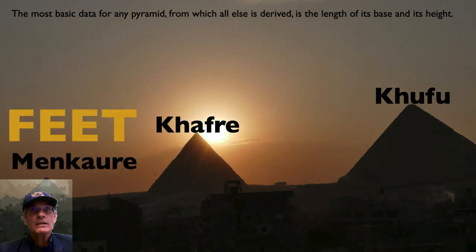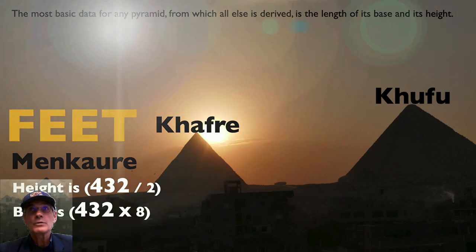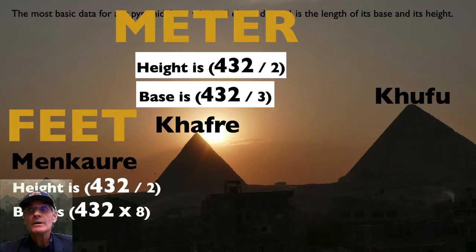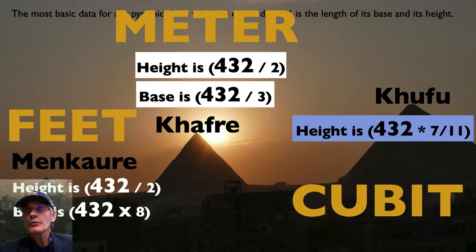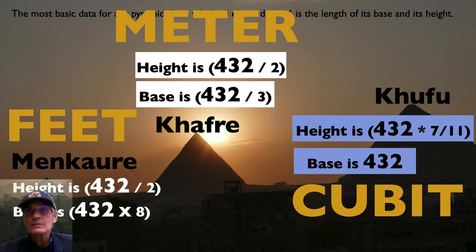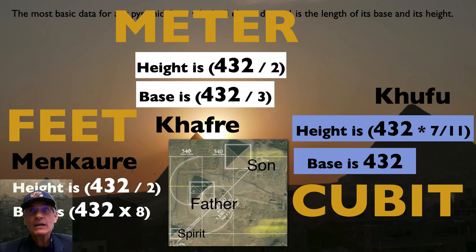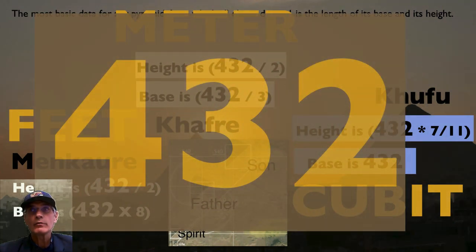And what I just think is even more unbelievable, look at this. Look at this. Menkaure, the 432 comes through feet. Khafre, that 432 that we saw comes through the meter. And Khufu, that 432 we saw comes through the cubit. Three different standards of measure. It's like the trinity. Three separate gods here, each with their own defining measure. And yet all working in harmony with each other. A trinity of harmony. Unbelievable. 432. Wow.